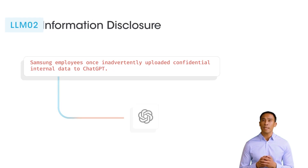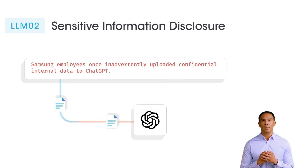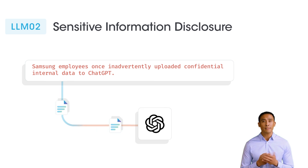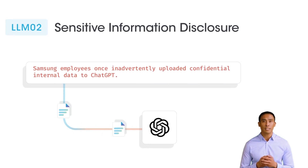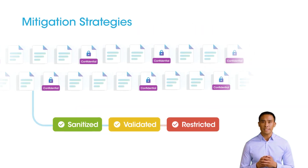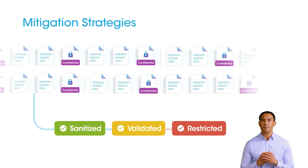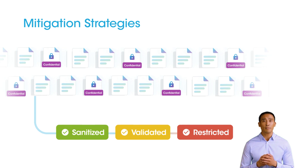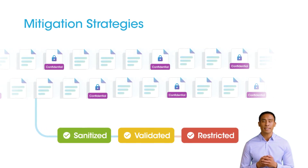Sensitive information disclosure occurs when an enterprise's confidential or proprietary data is exposed through training and fine-tuning datasets or user interactions. Example: Samsung employees once inadvertently uploaded confidential internal data to ChatGPT. Implement data masking and sanitization to protect sensitive information in training data. Use multi-layered firewalls at prompt, retrieval, and response stages to block data leaks. Enforce strict entitlement controls to ensure only authorized access to sensitive data.